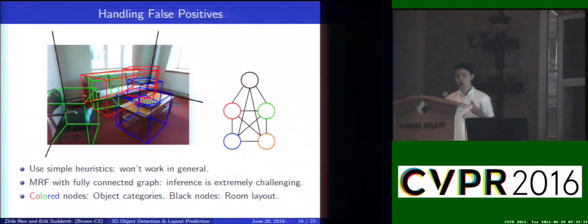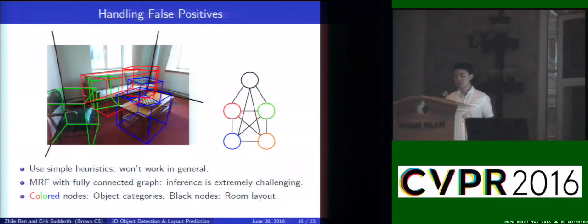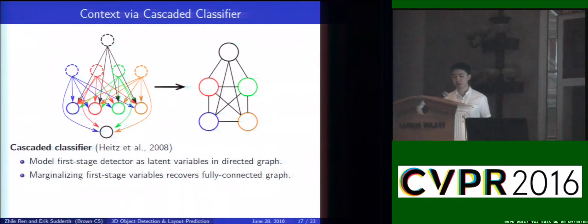Because all of our detectors run independently for different objects in the scene, there are going to be a lot of false positives. For example, there's a false positive for the chair detector on part of the sofa. Simple heuristics won't work in general, and traditionally people make use of a Markov random field with a fully connected graph, but the inference is pretty challenging. To handle this, we make use of cascaded classification. Specifically, we model the first-stage detector as latent variables in a directed graph — if you marginalize the first-stage variables, you can recover the fully connected graph.